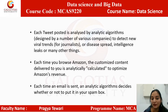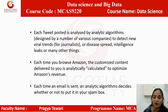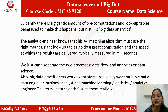Each time you browse Amazon, the customized content delivered to you is analytically calculated to optimize Amazon's recommendations. Each time an email is sent, an analytical algorithm decides whether or not to put it in your spam box. Evidently there is a gigantic amount of pre-computation and lookup tables being used to make this happen, but it still is big data analytics.